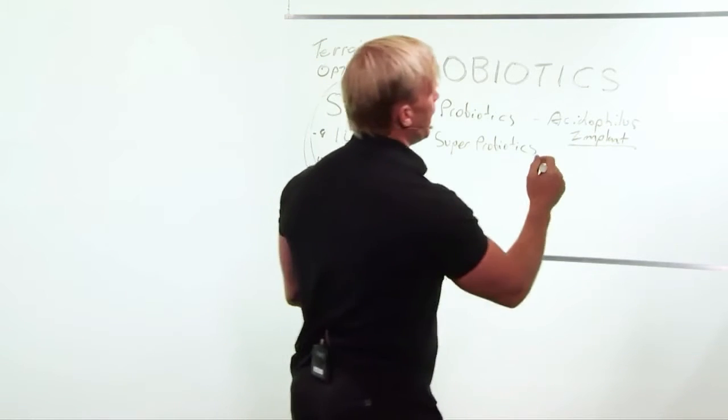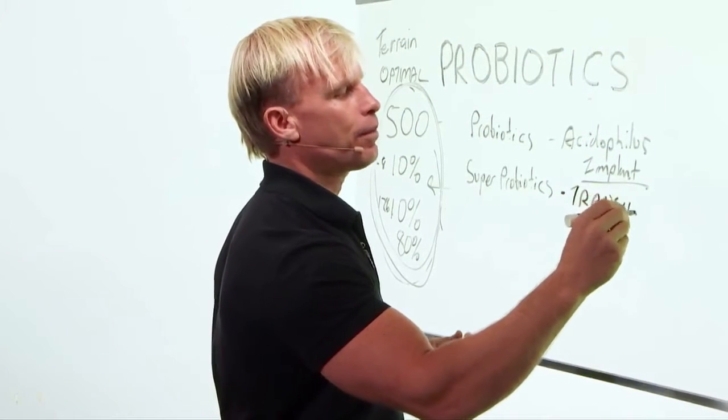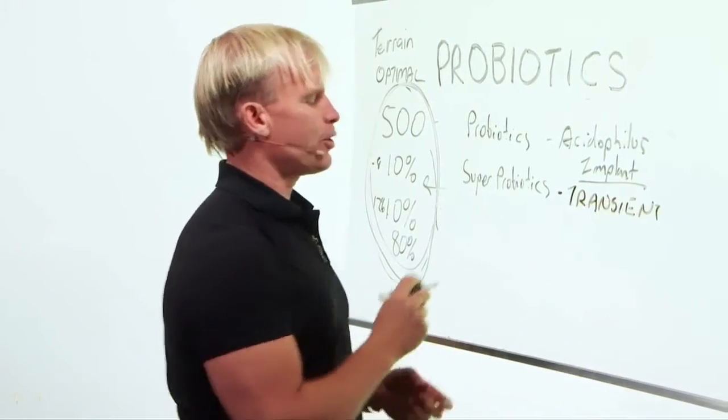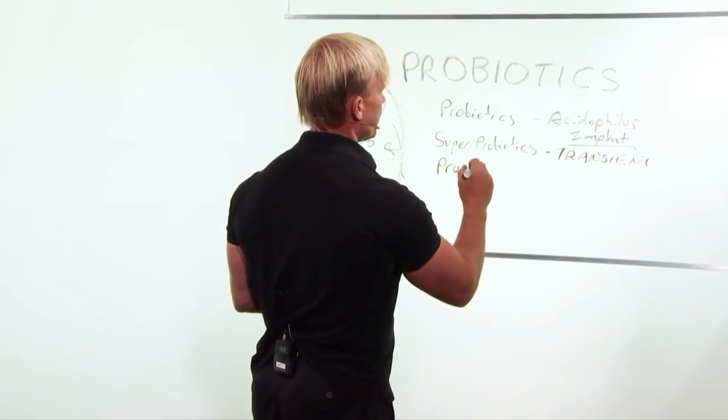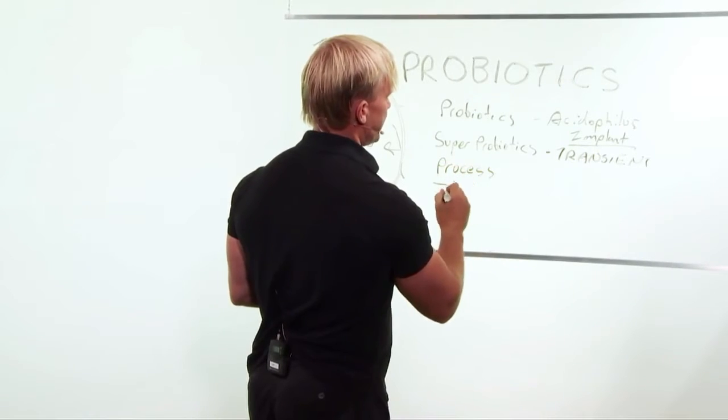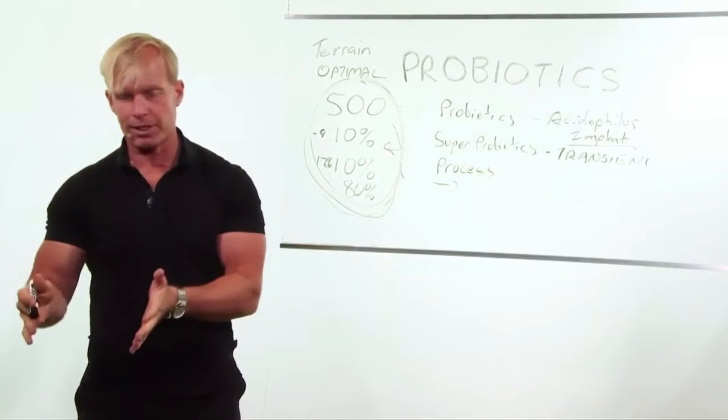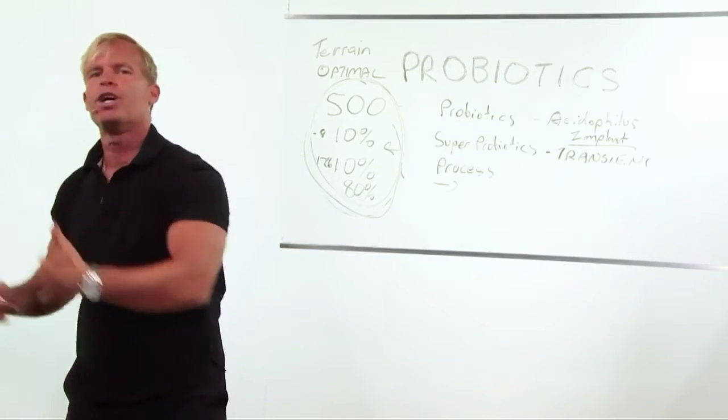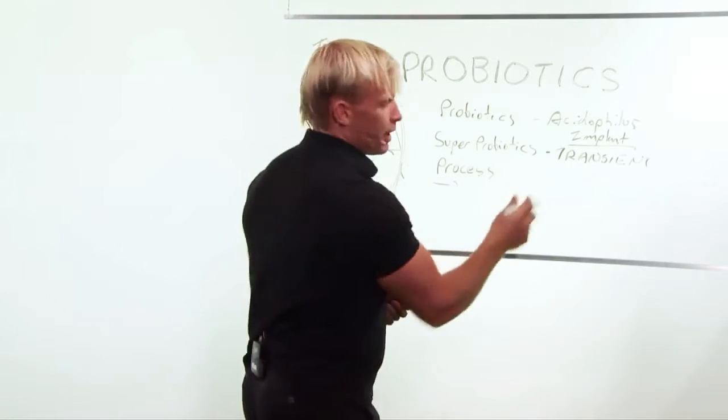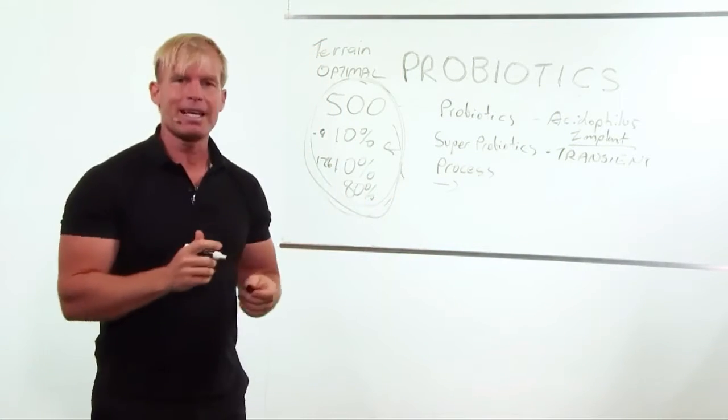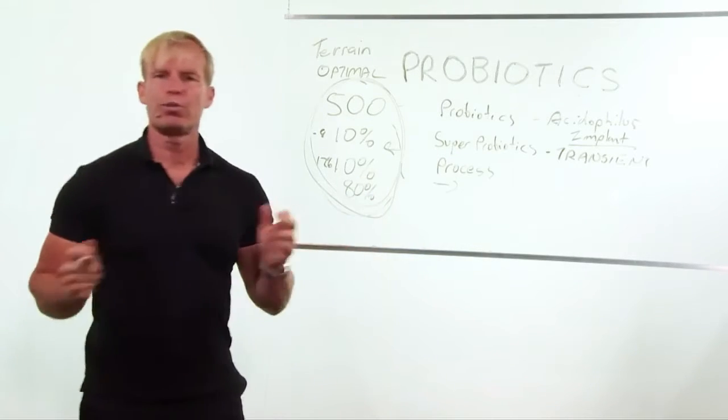So a super probiotic is oftentimes what we call a transient strain. So how do you make a super probiotic? What you do is you take them through a process that it's like a Navy SEALs training. You know, you can go to the military and become a military guy. But if you really want to go to the next level, you need to be a Navy SEAL. A Navy SEAL is a special group that they deal with specific, very intense situations. And they go in, they go out, and they're done.